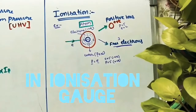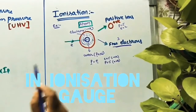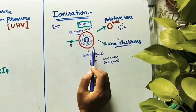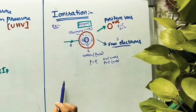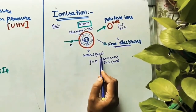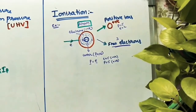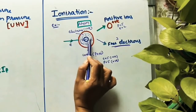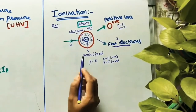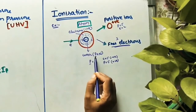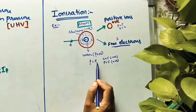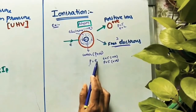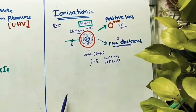So what is ionization? I took one example with one atom. As we know, at the center of an atom, protons and neutrons will be there. Protons are positively charged, neutrons have no charge — they are neutral. Around the center, electrons are rotating in orbits. The number of electrons equals the number of protons, meaning the positive charge equals the negative charge. At that time only, this atom is in a neutral position.